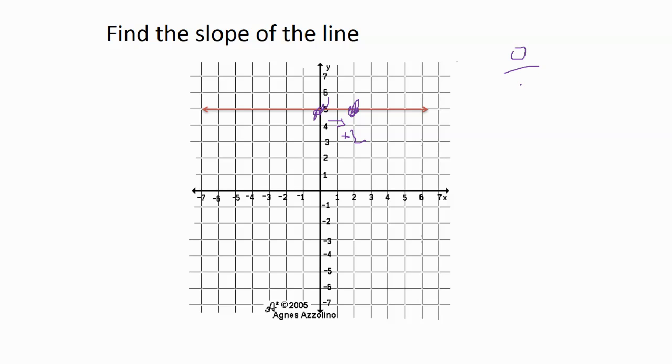I would end up getting zero over two, which is just zero. So the slope of that line, of a horizontal line, is just zero. And you don't really need to write out any calculations. Anytime you see a horizontal line, it has a slope of zero.